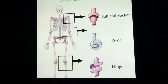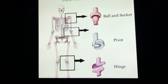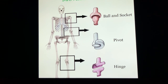You can see a clear image of freely movable joints. First, you can see the ball and socket — these are joints that can move. Then there is the pivot and the hinge. The main purpose of these joints is to make the bones move and help to move the body parts.